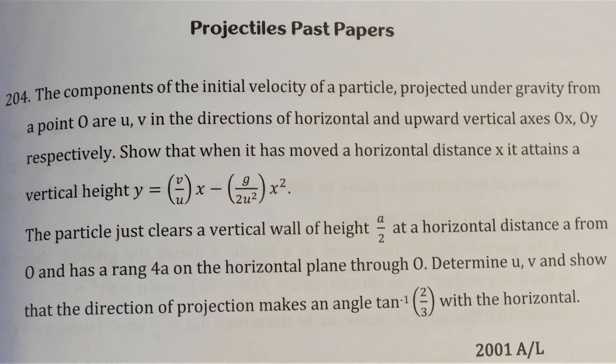Show that when it has moved a horizontal distance x, it attains a vertical height y equals v over u times x minus g over 2u squared times x squared.